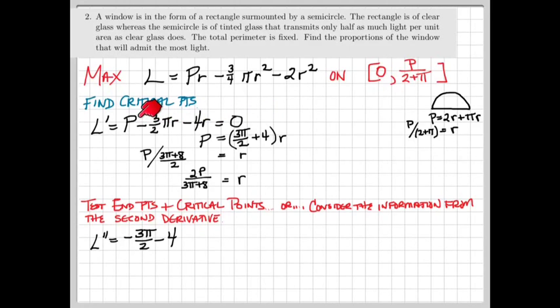-3/2 πR, when we take the derivative with respect to R, gives us its constant, -3/2 π. And -4R gives us -4. So the second derivative in this case is -3π/2 - 4. This in itself is a constant, and it's always negative. That means our function is always concave down.